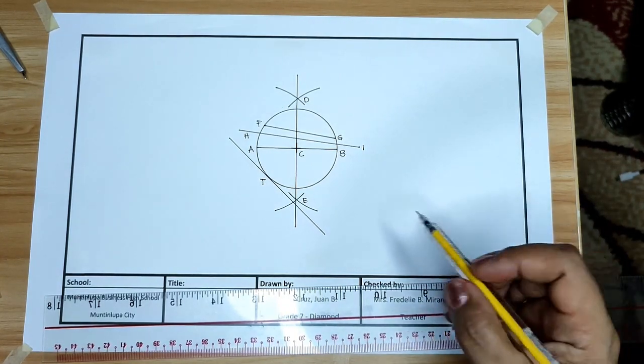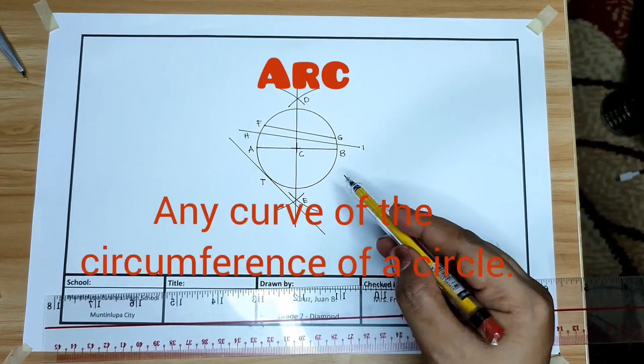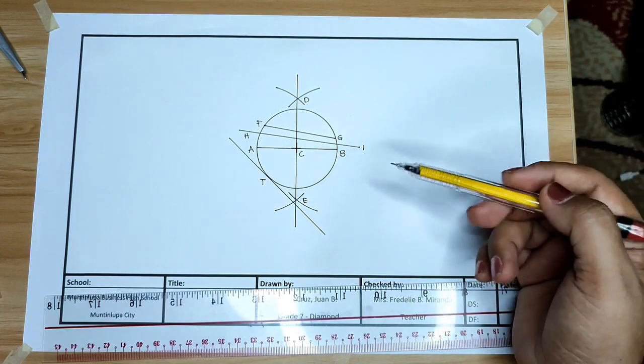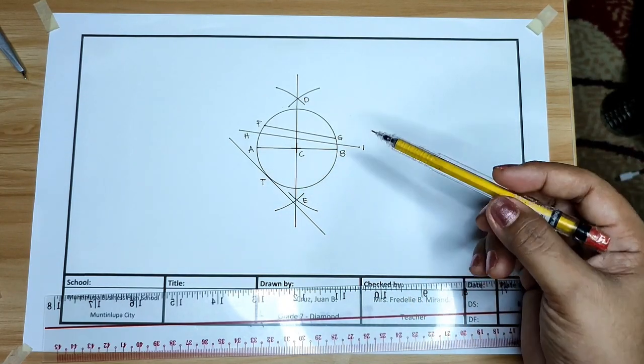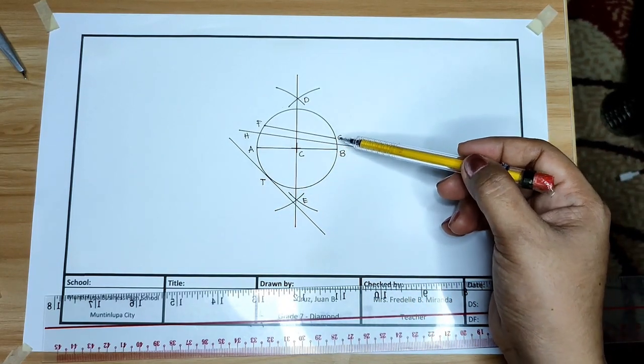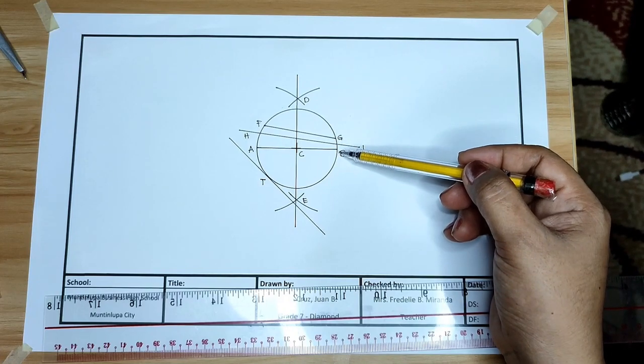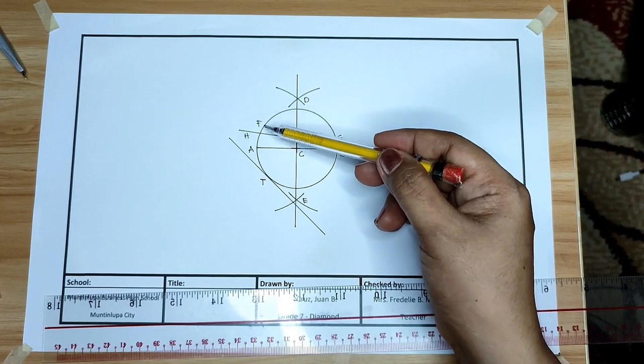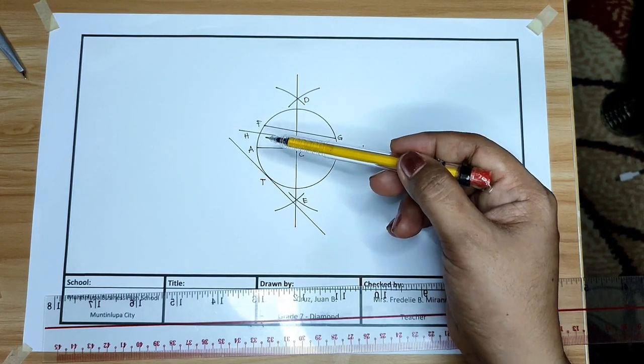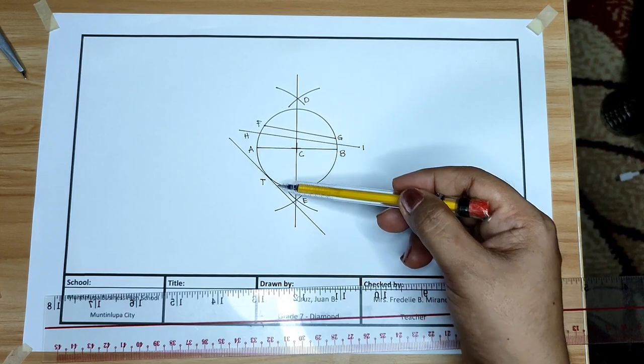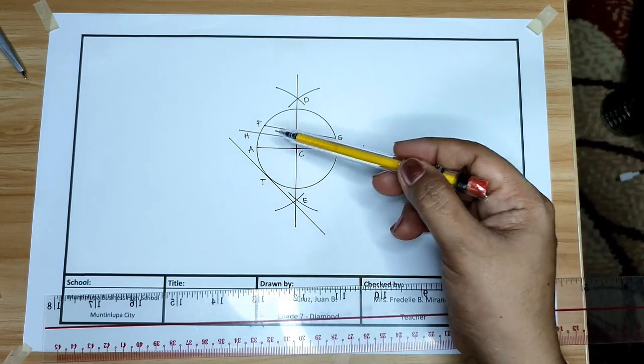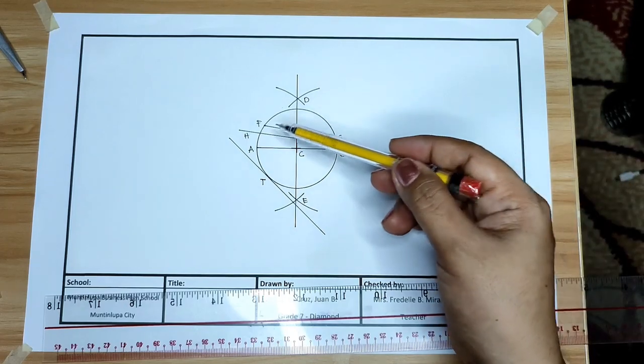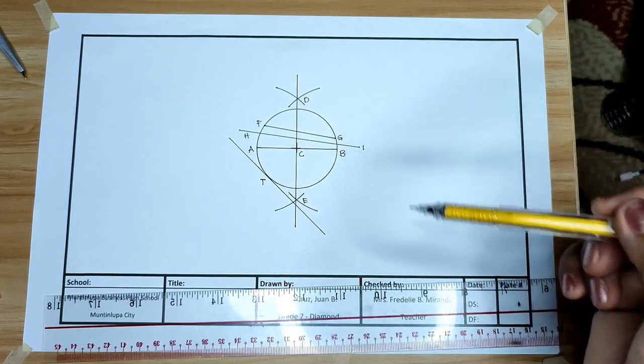Next is arc. Any curve on the circumference of the circle. That is arc. For example, point G and B, point G and F, point F and A, point A and B, point A and F, point F and G. That is arc.